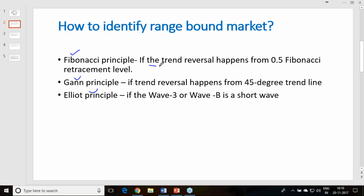The Fibonacci principle says that if the trade reversal happens from the 0.5 Fibonacci retracement level — suppose the price is 100 rupees, resistance at the 0.5 Fibonacci retracement is at 105 and support is at 97 — if the price moves between this band, it is known as a range-bound market.